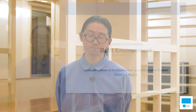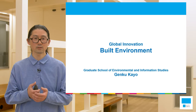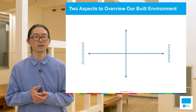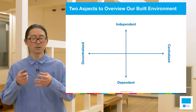Hi everyone. Today I want to show you about the built environment and issues, focusing on how global innovation supports creating and building the environment from the past and the future. Our built environment is designed as a result of a series of global innovations. I want to show two aspects to overview our built environment: one is decentralized and centralized on the x-axis, and the y-axis is about dependent and independent. This diagram supports you to understand more about our built environment and how it should be designed.